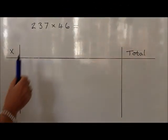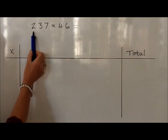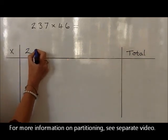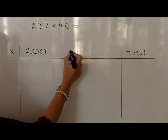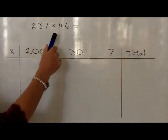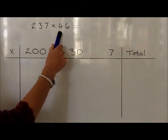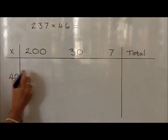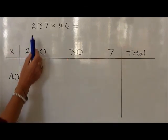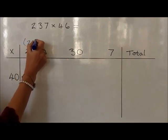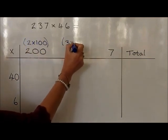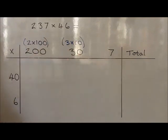With the question 237 times 46, we start off by partitioning the 237 into the hundreds, tens, and units. So the 2 in the hundreds we write as 200, the 3 in the tens we write as 30, and the 7 in the units we write as 7. To help with this calculation, we write the 200 as 2 times 100, the 30 as 3 times 10, and the 7 we leave as 7 units.